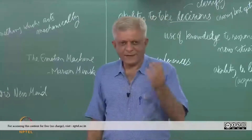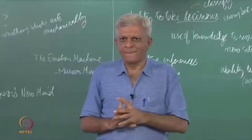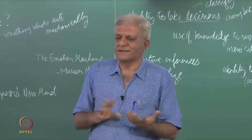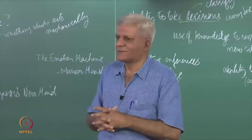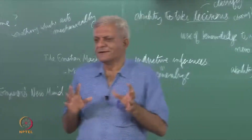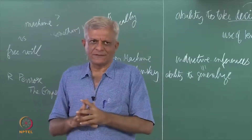Then there are arguments involving emotion, intuition, consciousness, and ethics. Some people say it would not be ethical to have intelligent machines, therefore machines cannot be intelligent. This is a rather roundabout argument — it says it would be bad, for some undefined reason, so we simply cannot have intelligent machines.